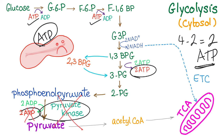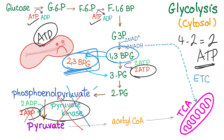Also, when this pathway is blocked, 1,3-bisphosphoglycerate will be converted into 2,3-bisphosphoglycerate — high yield. This will shift the oxygen dissociation curve to the right. I'll see you in the next video for more details on pyruvate kinase deficiency.